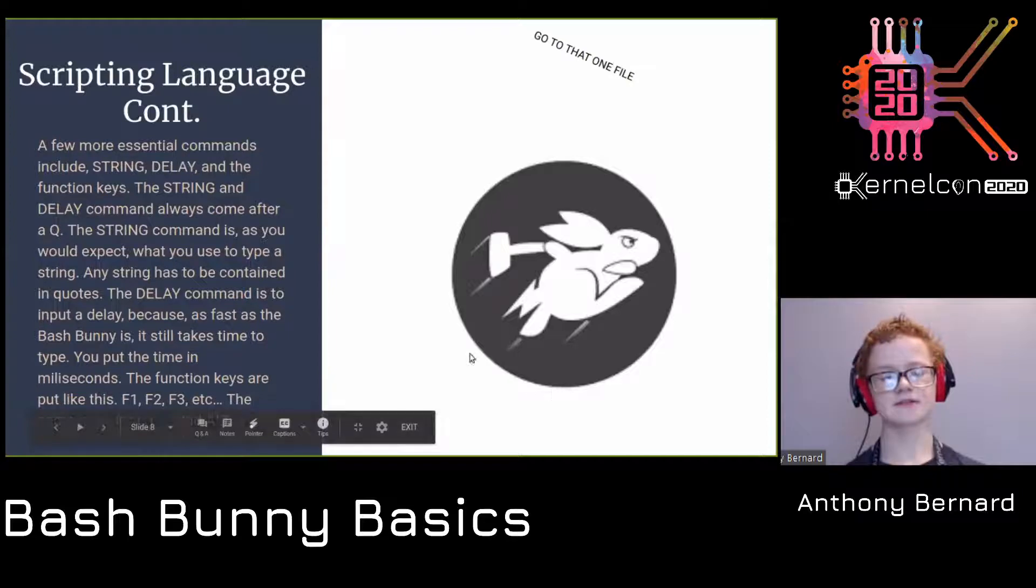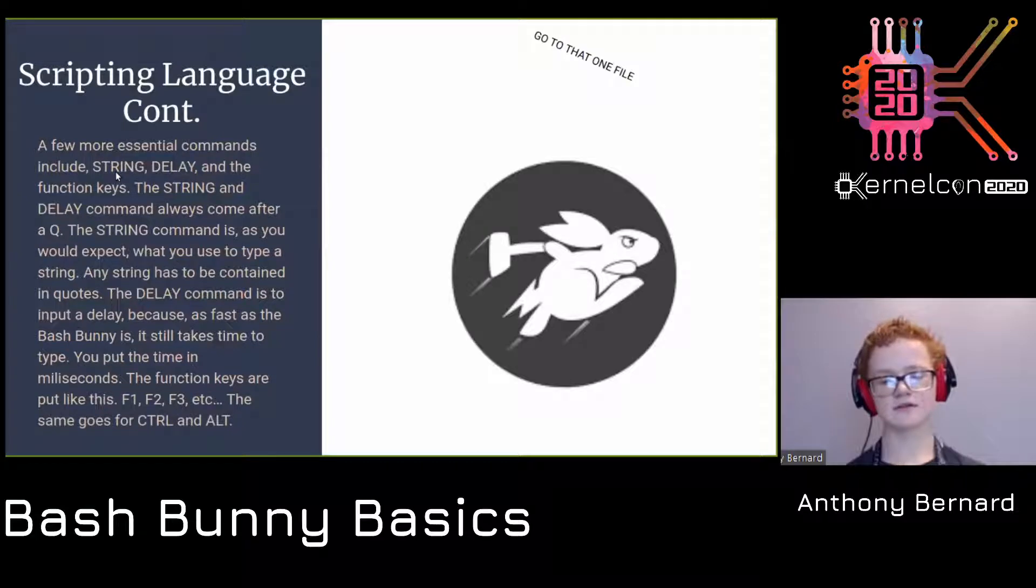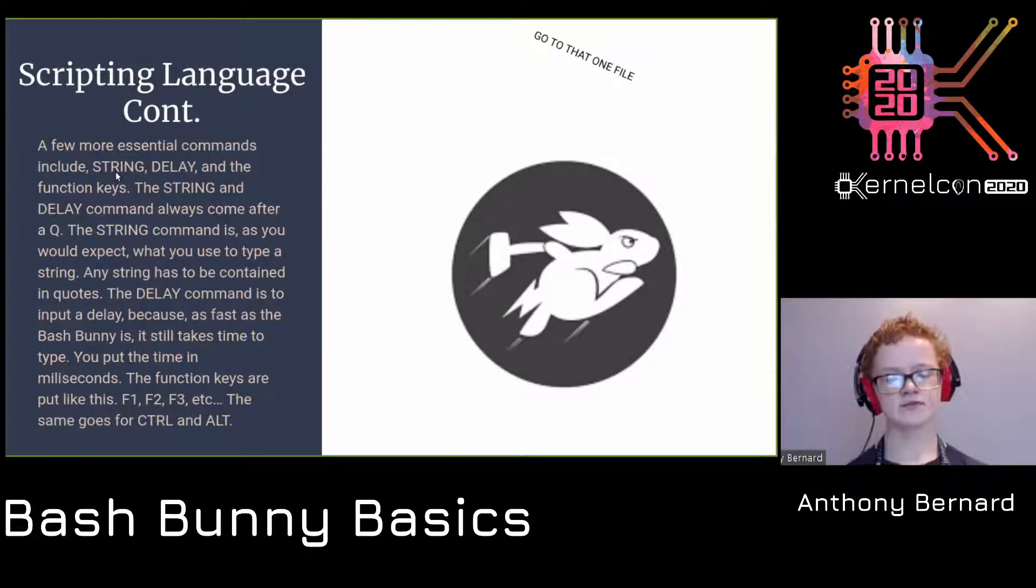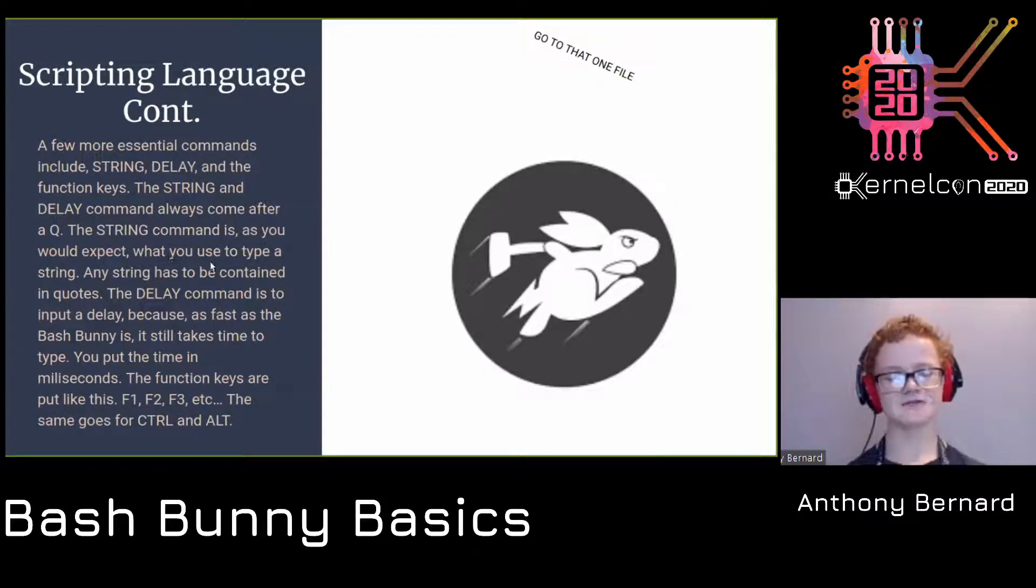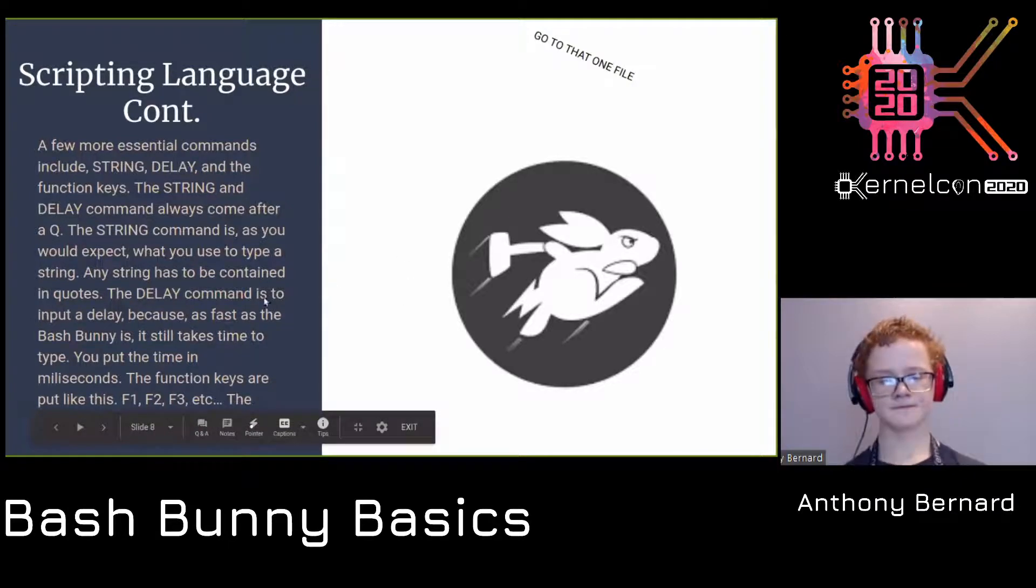Here's some more commands about the scripting language. There's string, delay, and the function keys. String and delay always come up for a capital Q. String command is a type of string, which you put inside of quotes. The delay command is to input any delay, and you use that in milliseconds. For function keys or control alt, you put just the name of them in all caps. I'll go to an example file real quick.